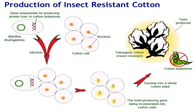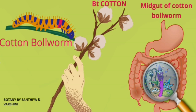So, now a question arises. Can the Bacillus thuringiensis bacteria directly kill the insects? The answer is no. The bacterium cannot directly kill the insects as the toxins present in the bacteria are inactive proteins. Only when it is inserted inside the cotton bollworm, this bacterial toxin becomes active.